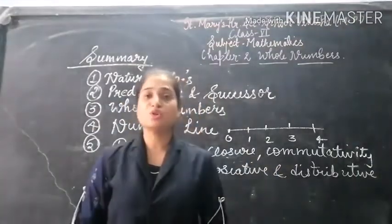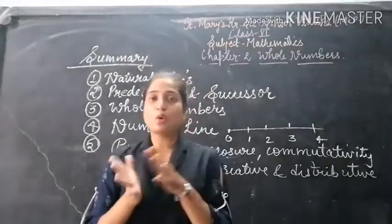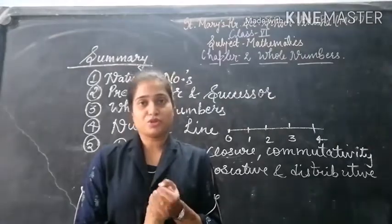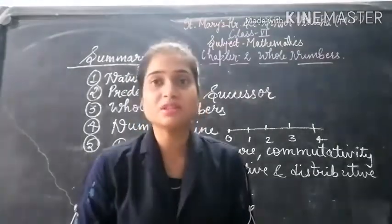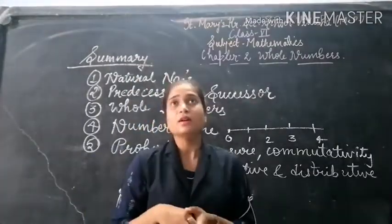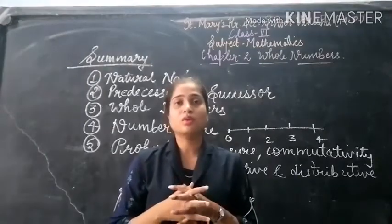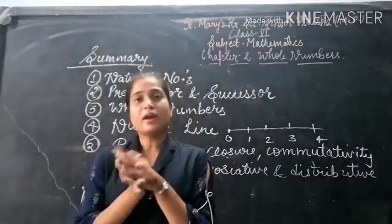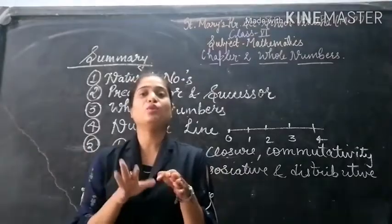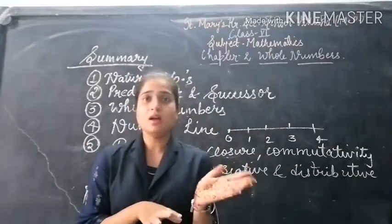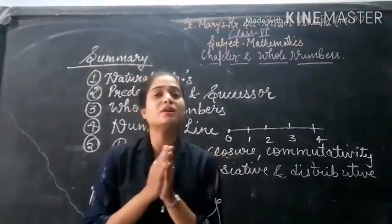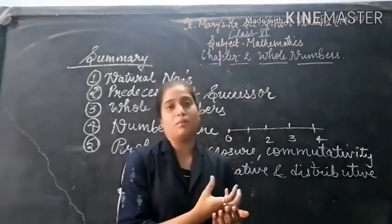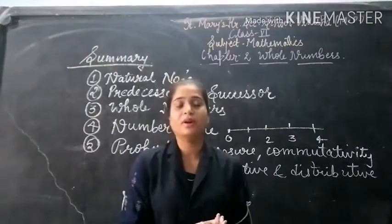In closure property, whole numbers are closed under addition and under multiplication. This means that if we add two whole numbers — suppose 1 and 2 — when we add 1 and 2, we get 3 as the answer. So when two whole numbers are added, we get the answer as a whole number.